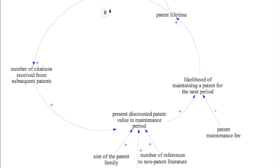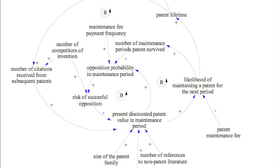Completing the picture at once now, we find two additional loops. One deserves a closer look as it is not reinforcing. The higher the present discounted patent value in maintenance period, the higher we assume the opposition probability in maintenance period to be. This follows the idea that the incentive of other patent owners to challenge the patent of our company increases with the value of the patent. If the value of the patent of our company is very low, then other companies are less likely to challenge it than if it were rather high.